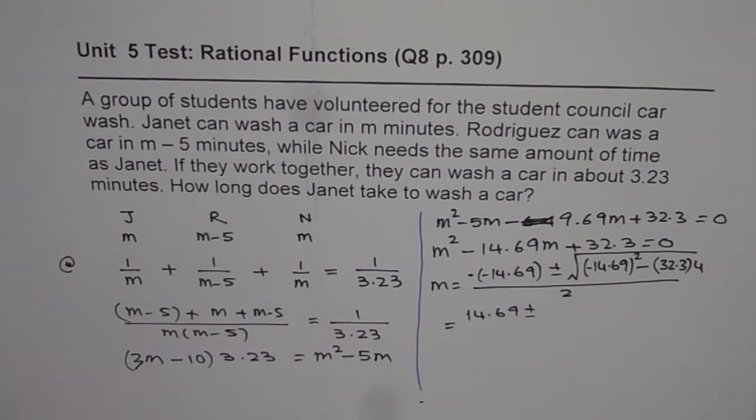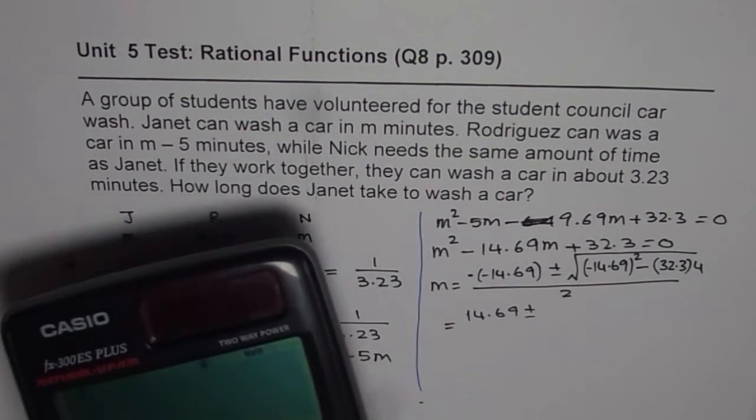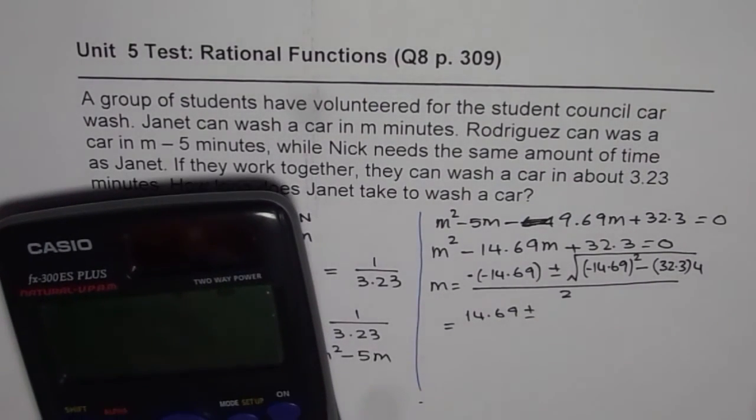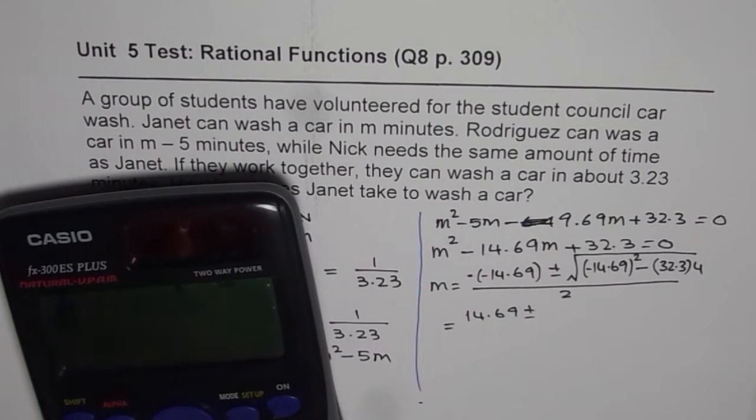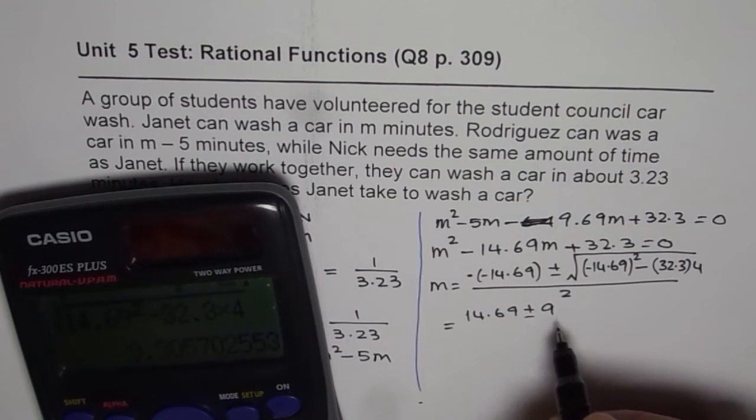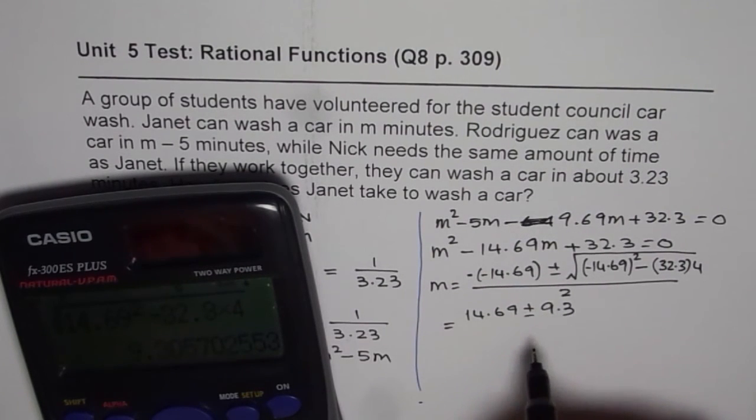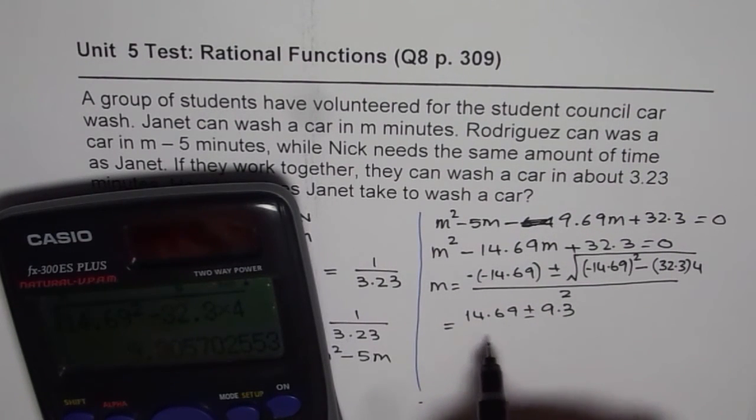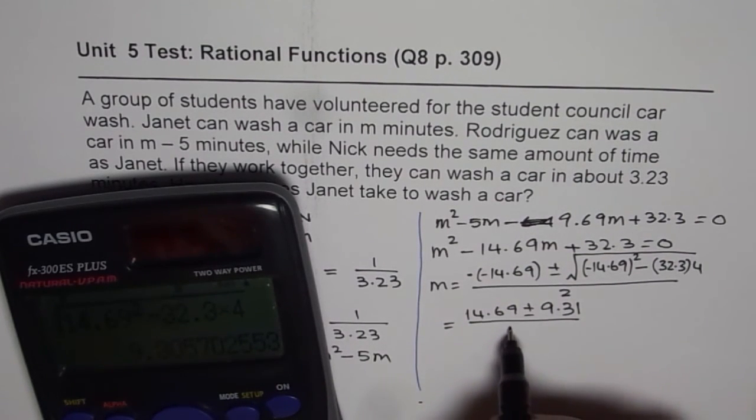So, we can use calculator and calculate this value. Let me first write 14.69 plus minus. We will calculate this square root value first. So, we get here, within square root, we have 14.69 square minus 32.3 times 4, that gives us 9.305. So, let me write 9.3. Okay, we can round it to 9, divided by 2.